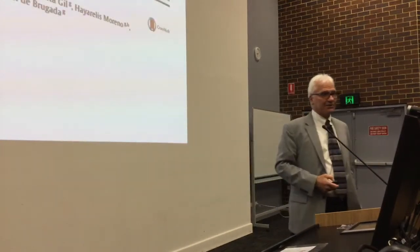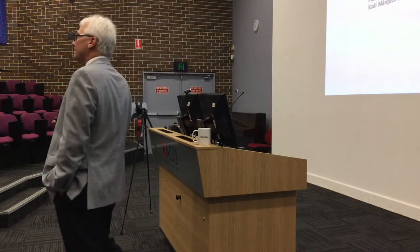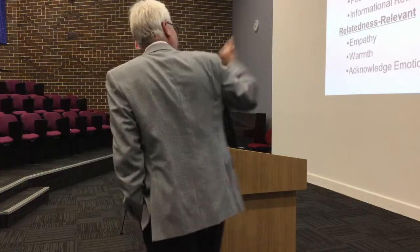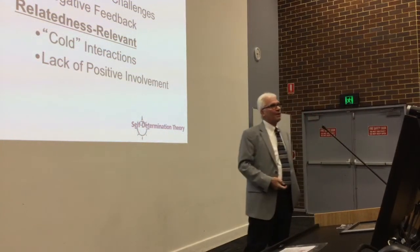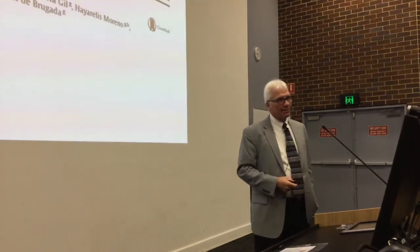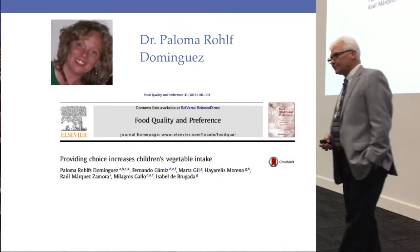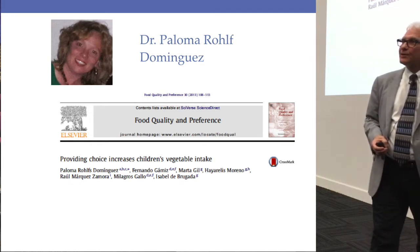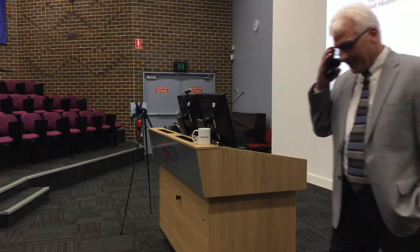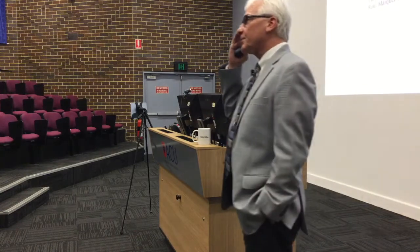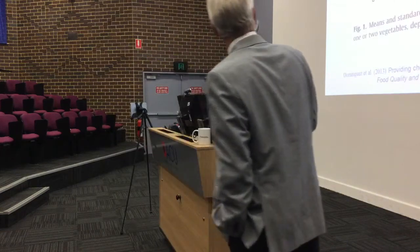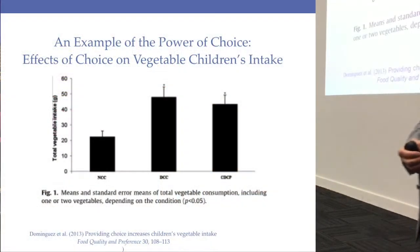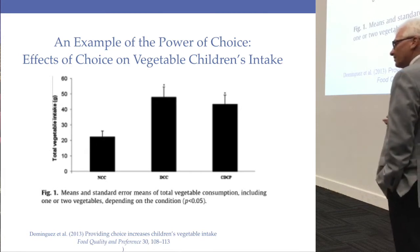Similarly, if you give people things that are optimally challenging — readily masterable — they'll be more likely to persist, relative to tasks that are either too difficult or too easy. And thirdly, when you treat people warmly, make them feel they belong, and acknowledge their emotions, they tend to be more intrinsically motivated. These early experiments supported our thinking that support for relatedness, competence, and autonomy should support intrinsic motivation.